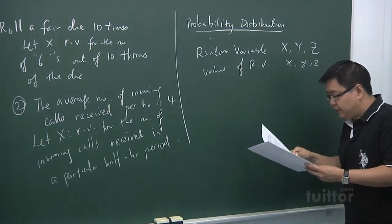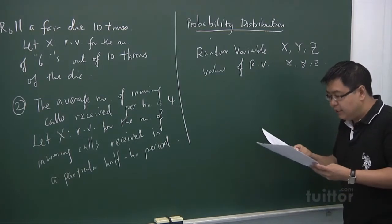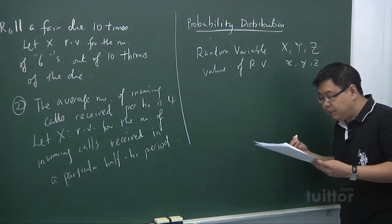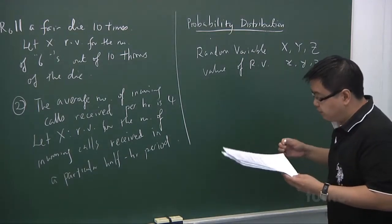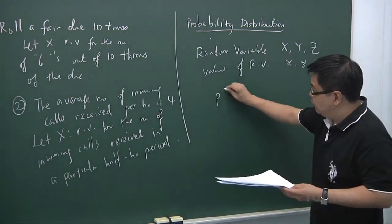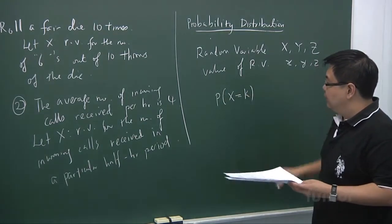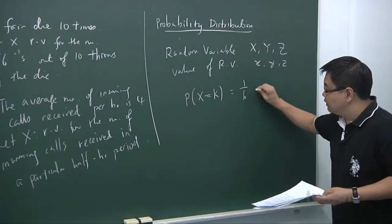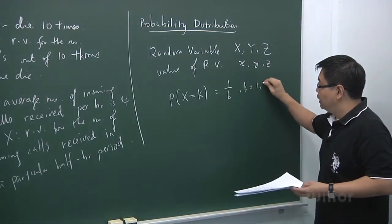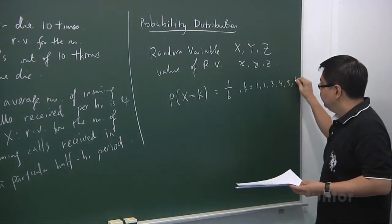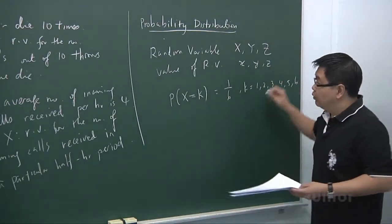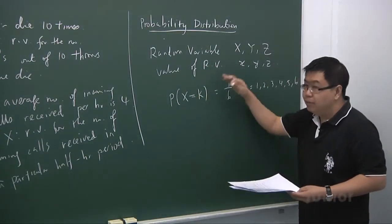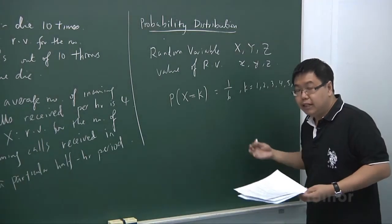Now, let's take a look at the example that is at the end of this particular handout. It says a fair die is tossed once. Find the probability distribution for the score x on the die. So because it's a fair die, we can actually define the probability distribution in a general form. That is the probability x equal k is always 1 over 6, where k takes values 1, 2, 3, 4, 5, and 6. So this is what we call probability distribution because it takes all the probabilities into the account.